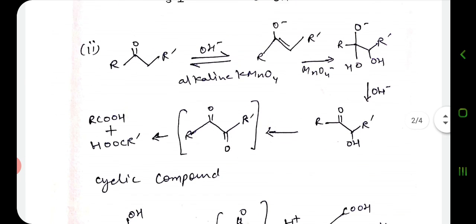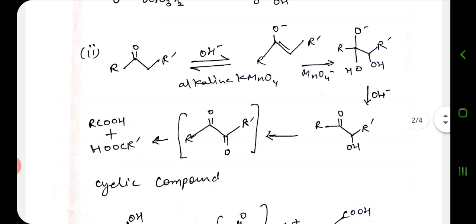If we use alkaline permanganate, in alkaline permanganate there are OH ions present. The alkaline permanganate is used, and first the OH in the alkaline medium attacks the ketone, and we get a cyclic intermediate through a transition state, which further converts into the corresponding acid.